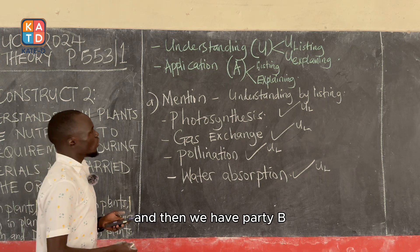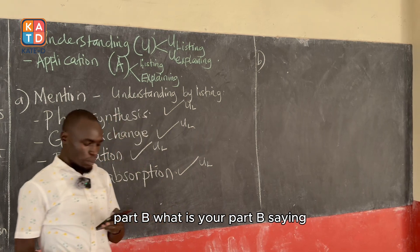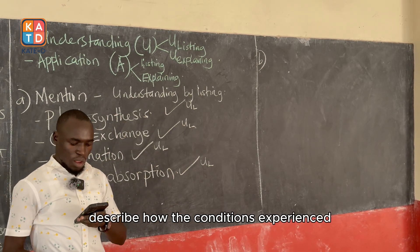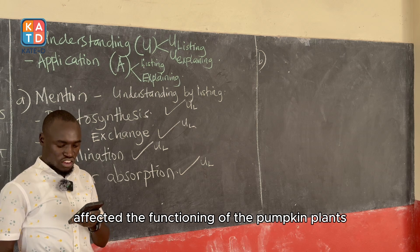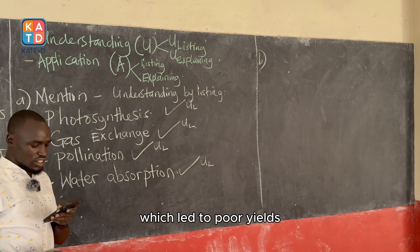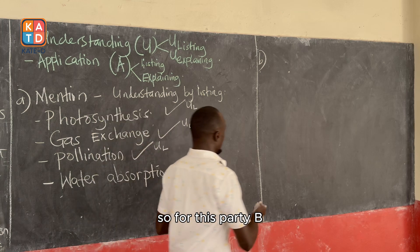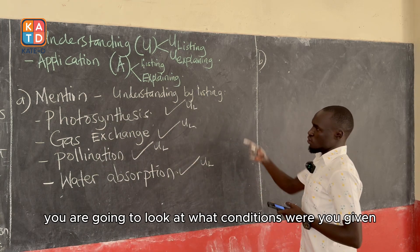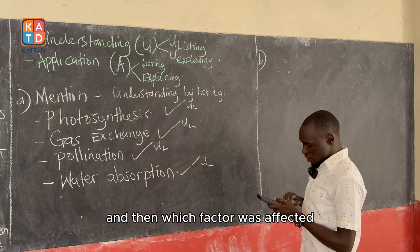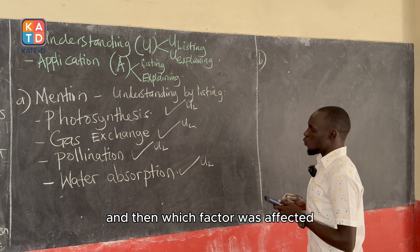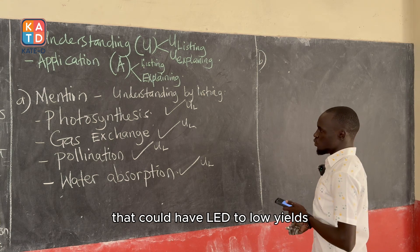And then we have Part B. Part B says: describe how the conditions experienced affected the functioning of the pumpkin plants, which led to poor yields. For Part B, you are going to look at what conditions were given, then which factor and which process was affected that could have led to low yields.